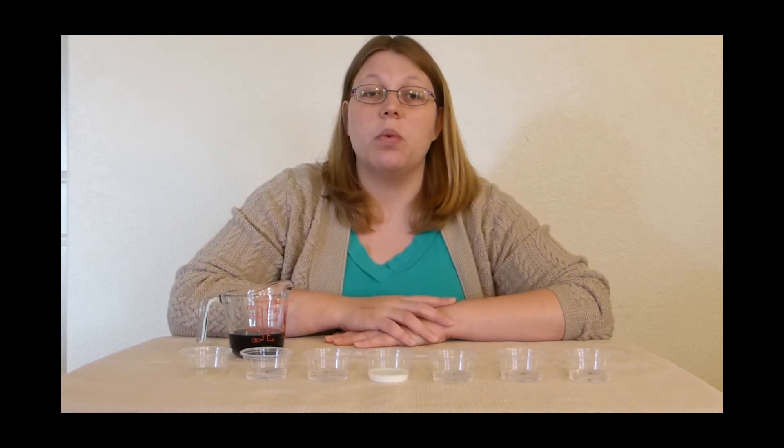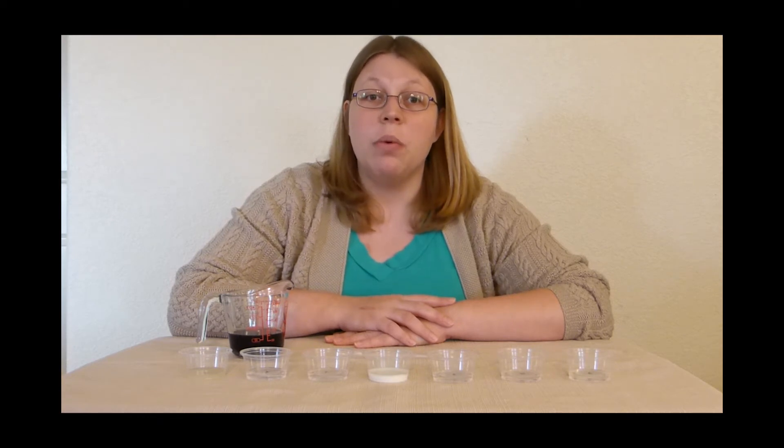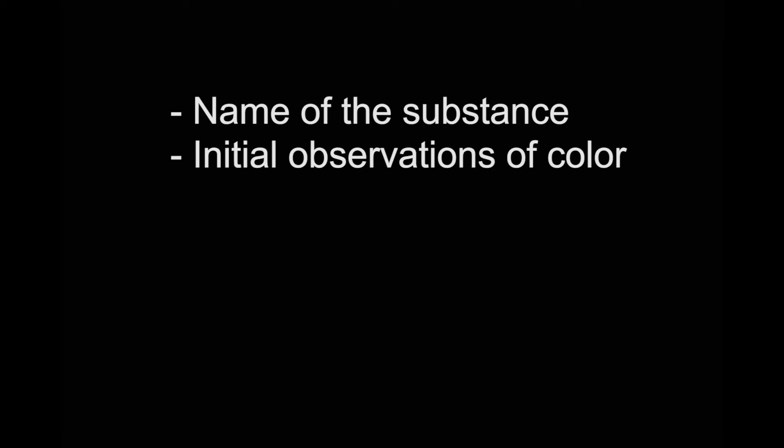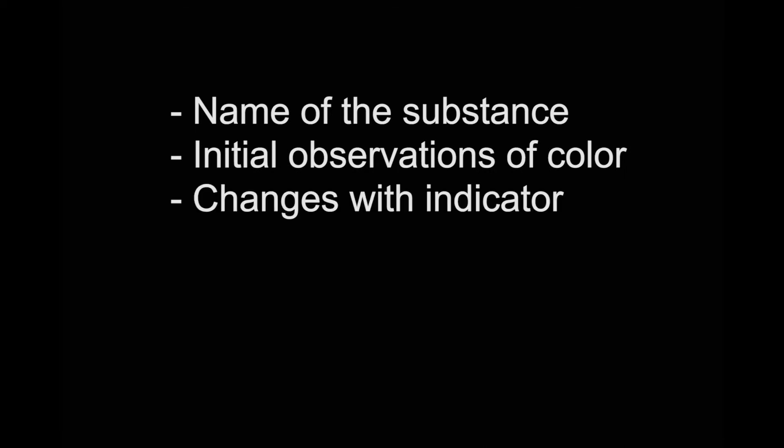But before we can test our unknowns, we need to determine what color the red cabbage indicator will turn for known pH values. We will then use this scale to determine the pH values for the unknown substances. As we perform the experiment, please write down the name of the substance being tested, initial observations of the color, observations of any changes once the indicator is added, and then the pH of the liquid.